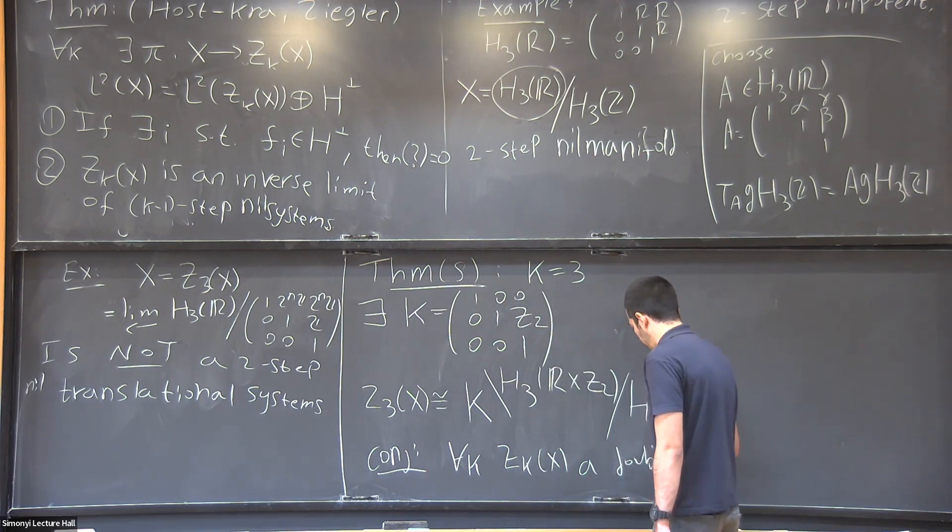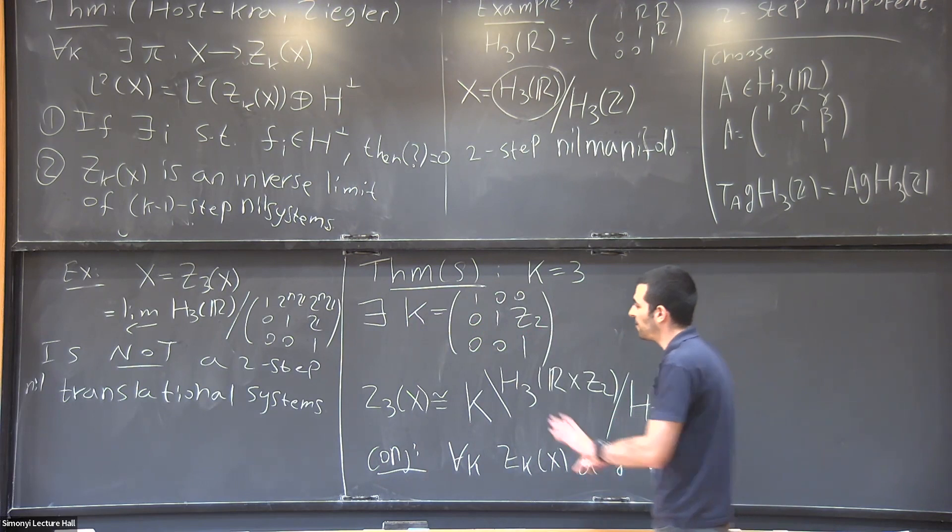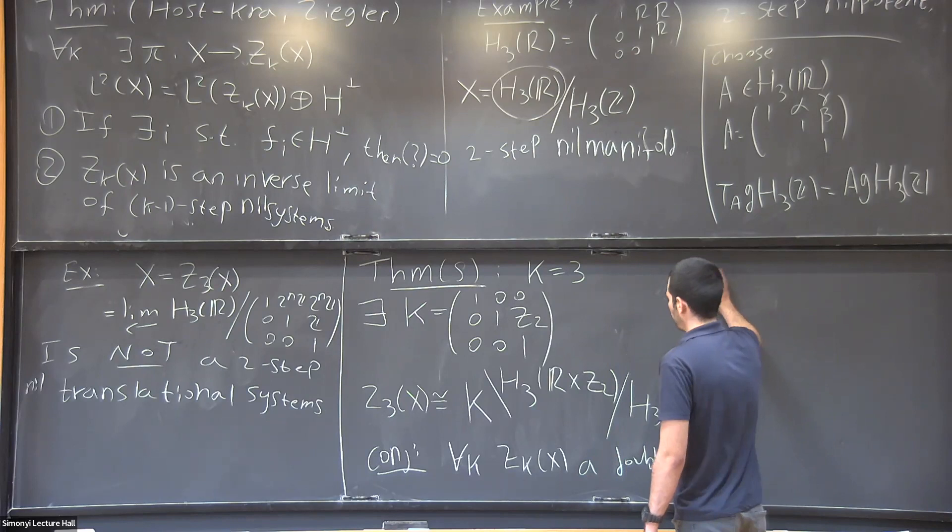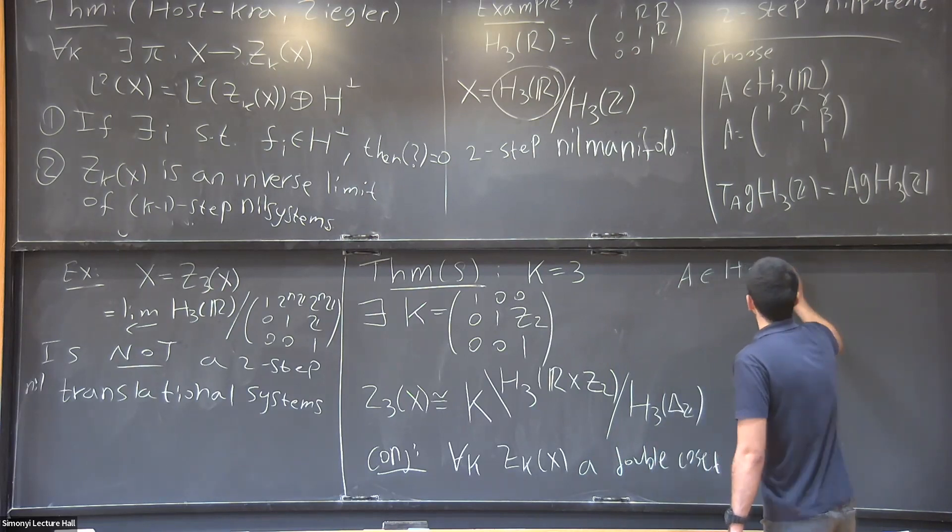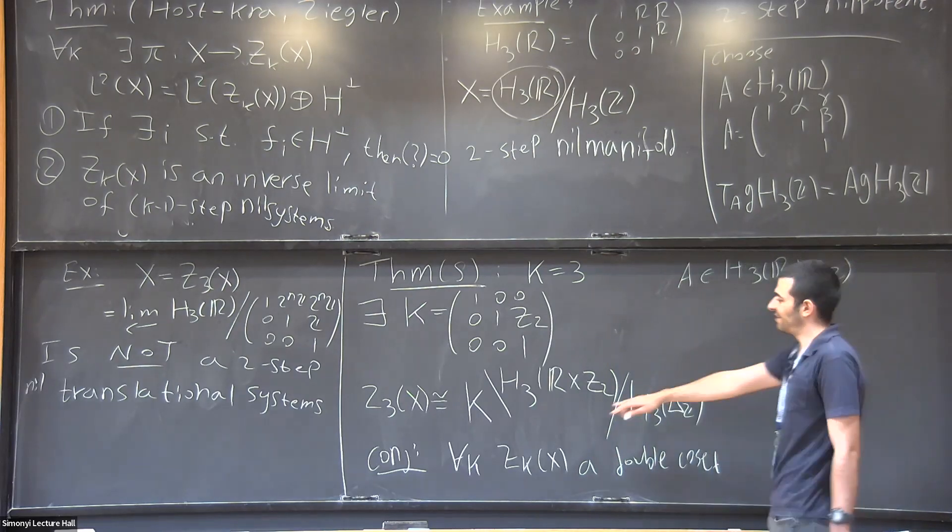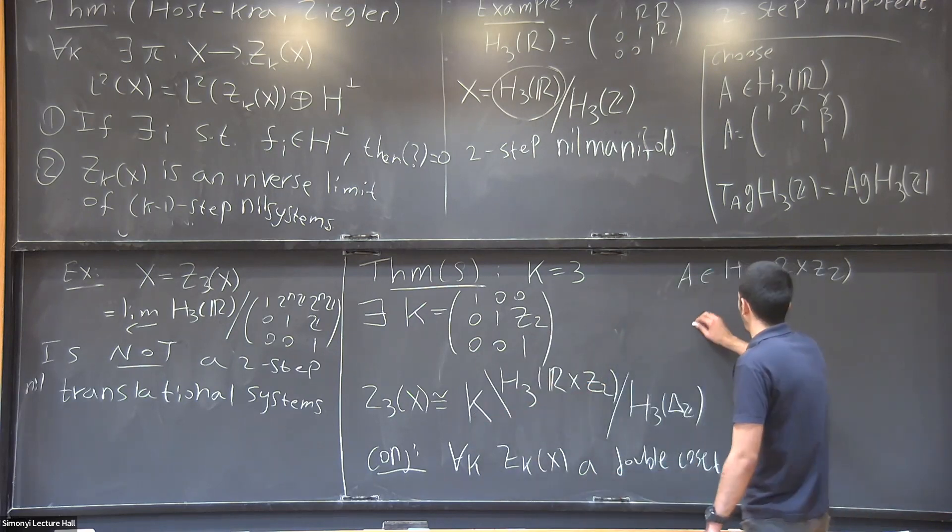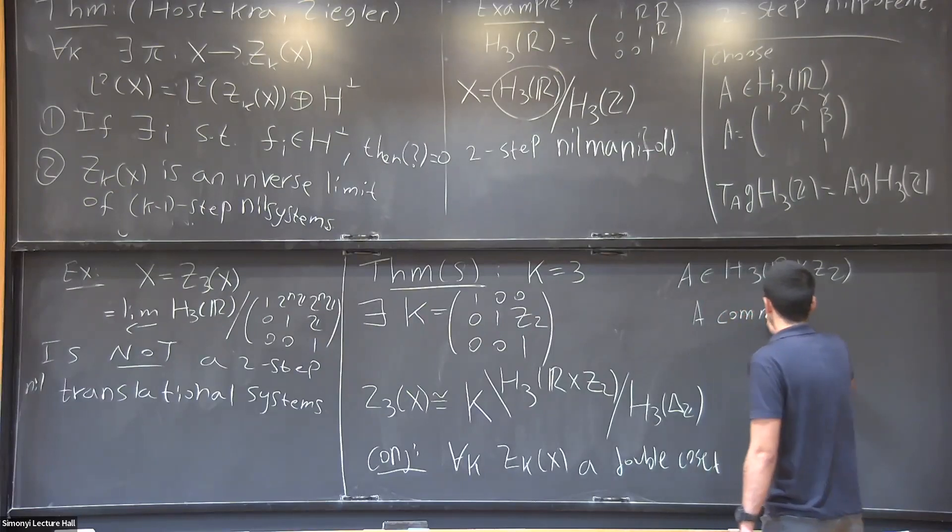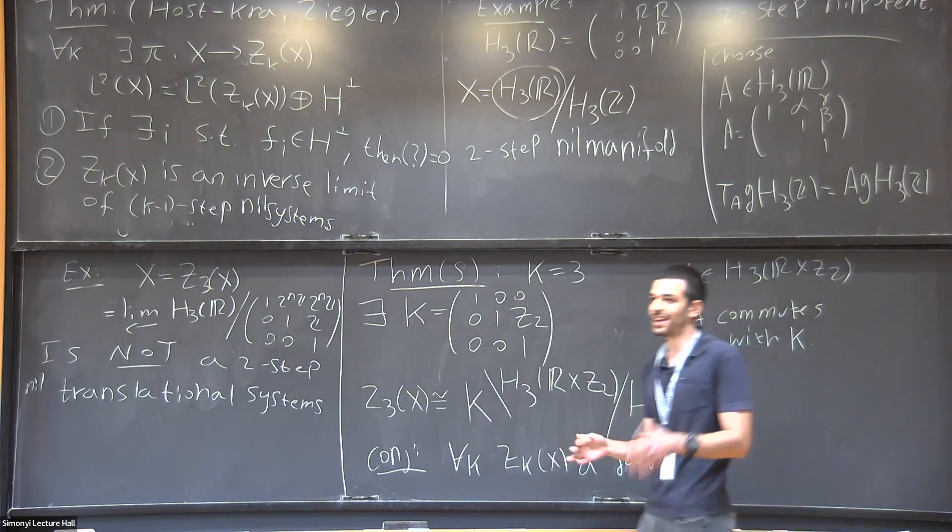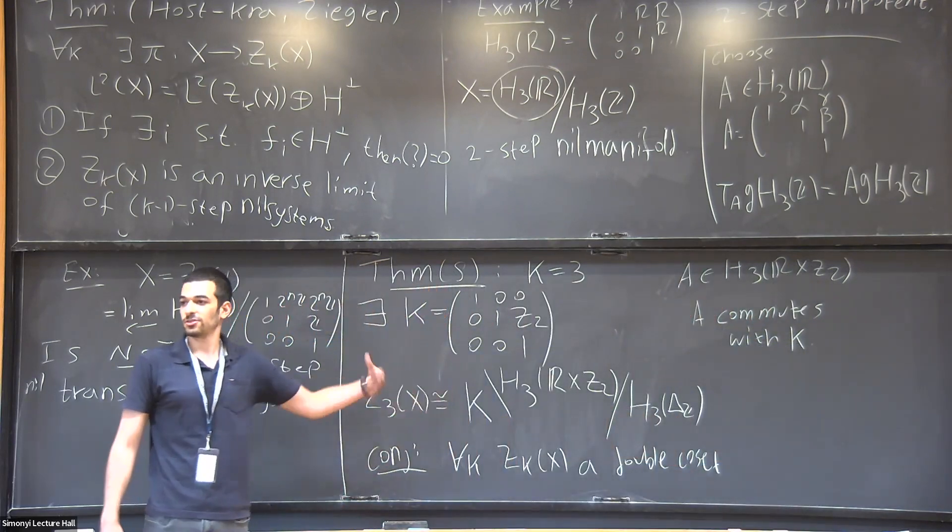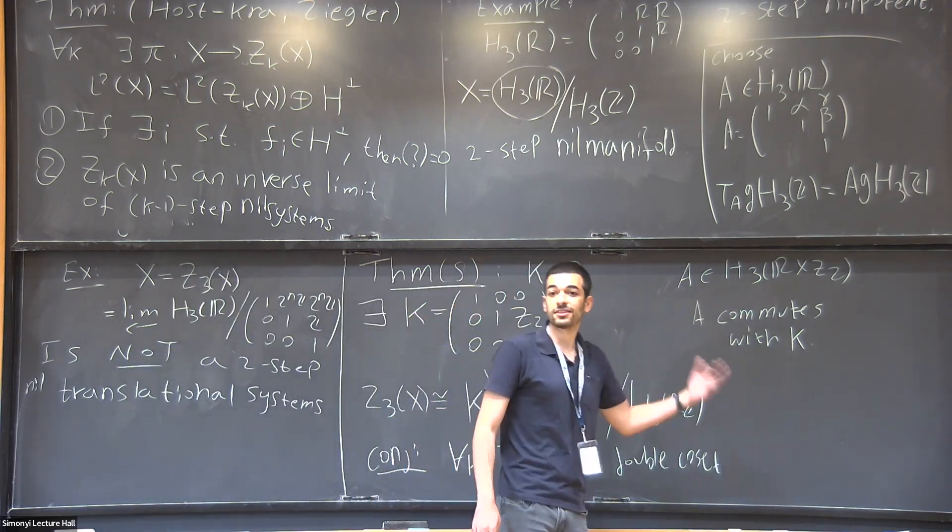Sorry, in this double coset, where's the action? Oh, so the action is, if you think about Z actions, you just have to choose an element A in this group, and you have to assume that it commutes with K, or something. Yeah, so A commutes with or normalizes K so that it will work. And in general, if you have G actions, so the same, you just choose an A_g for every g, and you hope that it is a homomorphism.